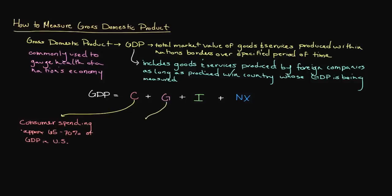G represents spending by all levels of government. At the time of this video, U.S. government spending as a whole has been decreasing as a percentage of GDP. This is partly due to the sequester at the federal level as well as lower property tax revenues at the local level. Although revenue from property taxes is improving, it is nowhere near its original level at the height of the housing market.